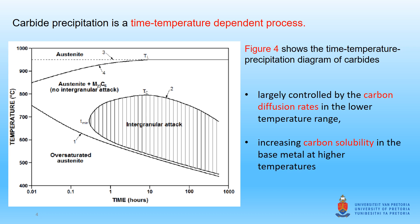Increasing the temperature will reduce the time it takes for precipitation to initiate and will increase the precipitation rate, while also increasing the solubility of carbon in the matrix. At temperatures around 750°C in Figure 4, the precipitation rate reaches a maximum because of the high diffusion rate of carbon. The shaded area where sensitization occurs is limited to below 800°C, because above this temperature chromium-depleted zones may be replenished by chromium diffusing from the grain interior. At very high temperatures, solubility significantly increases and the precipitates may start to dissolve back into the matrix. The highest risk for sensitization is at temperatures where precipitation rate is high.